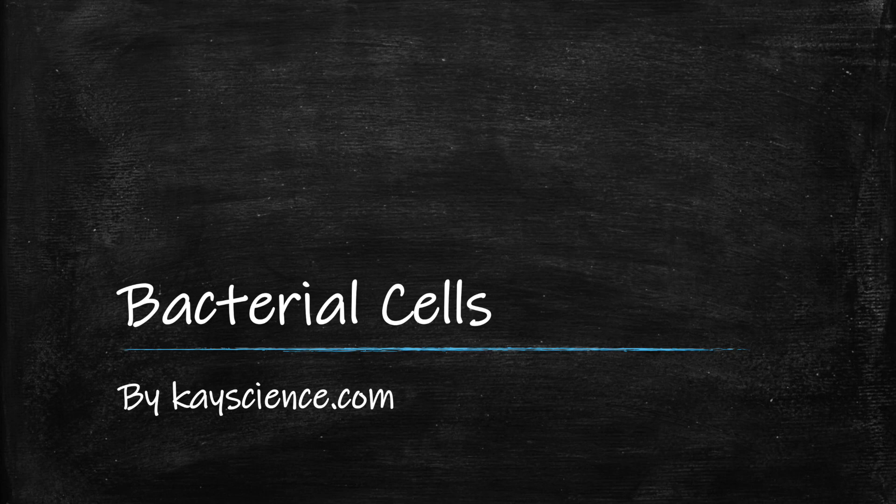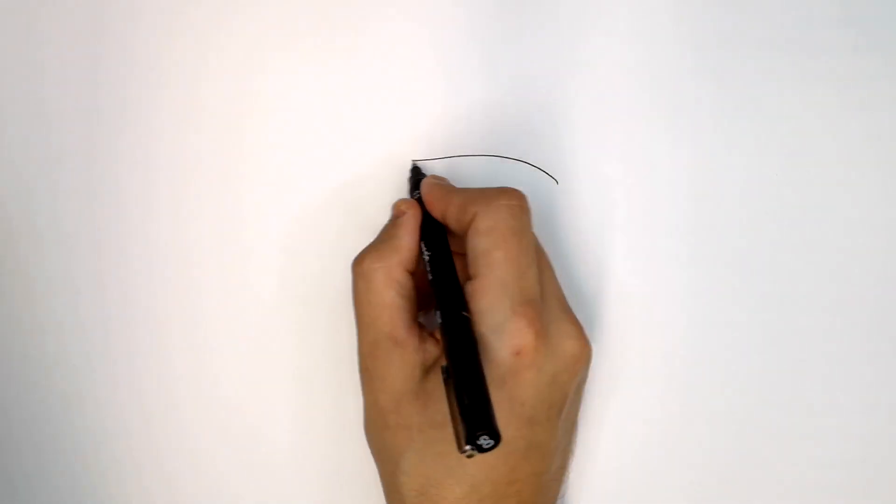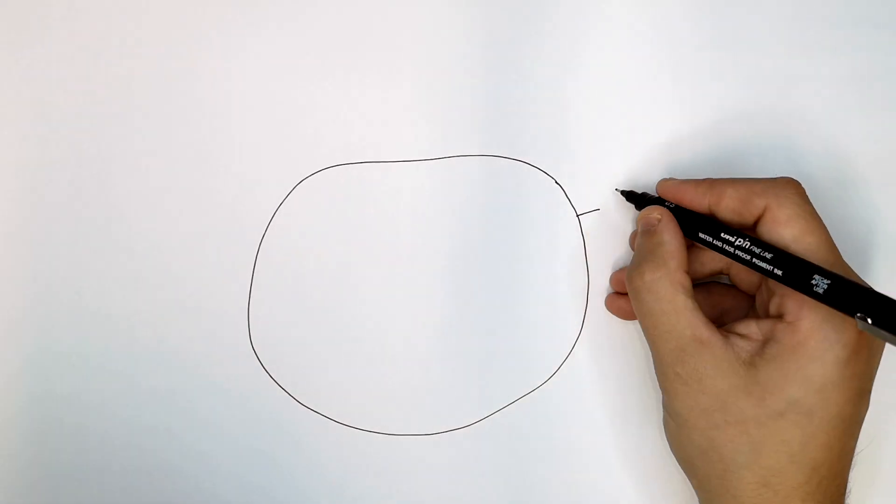Bacteria, by kscience.com. This is a bacterial cell, and it's got a cell wall.